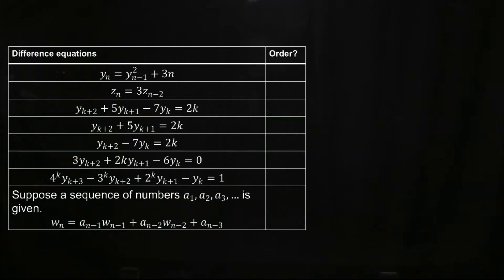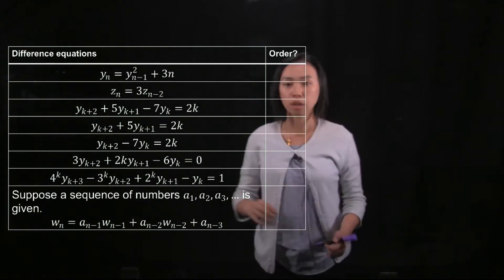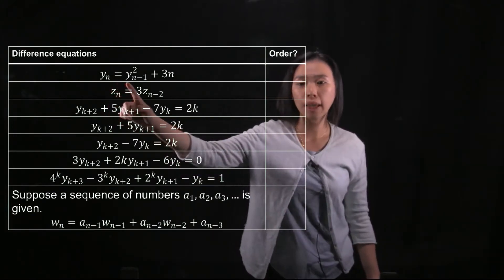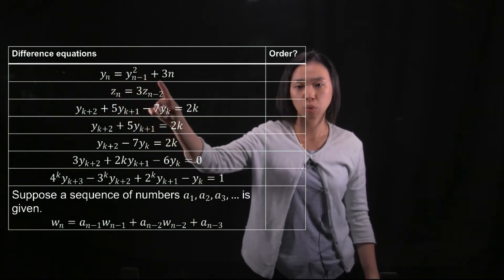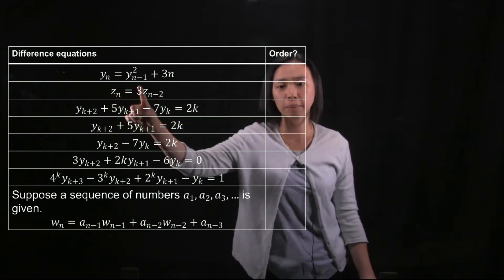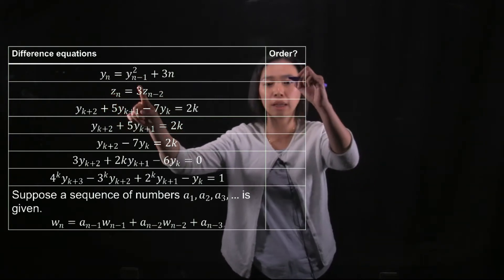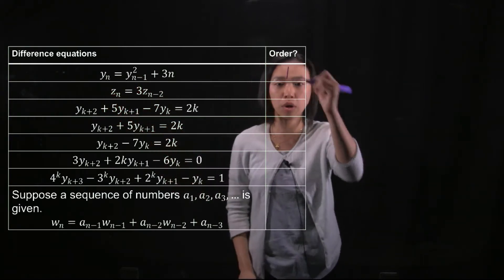We'll take a look at some examples for the order of difference equations. We'll start with this one: ym equals ym minus 1 squared plus 3n. So this yn depends on the previous one term only, and then the order of this difference equation is 1.